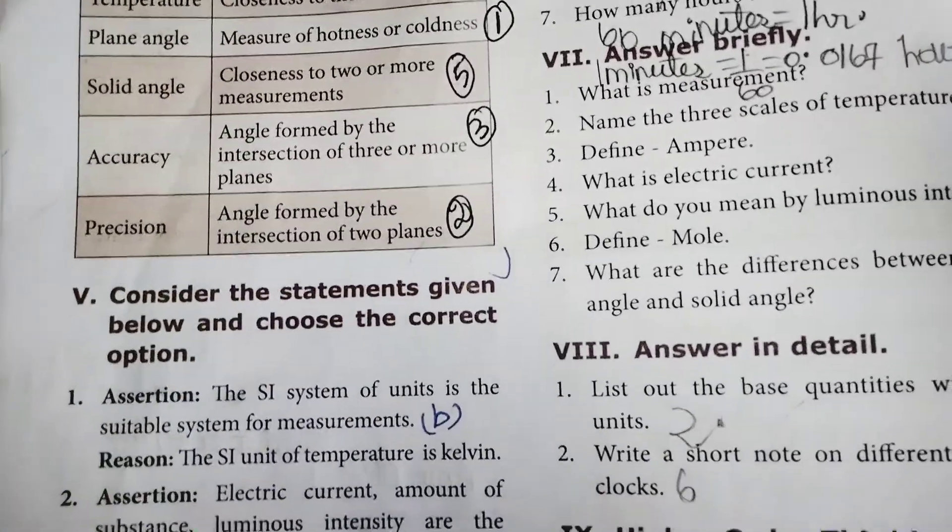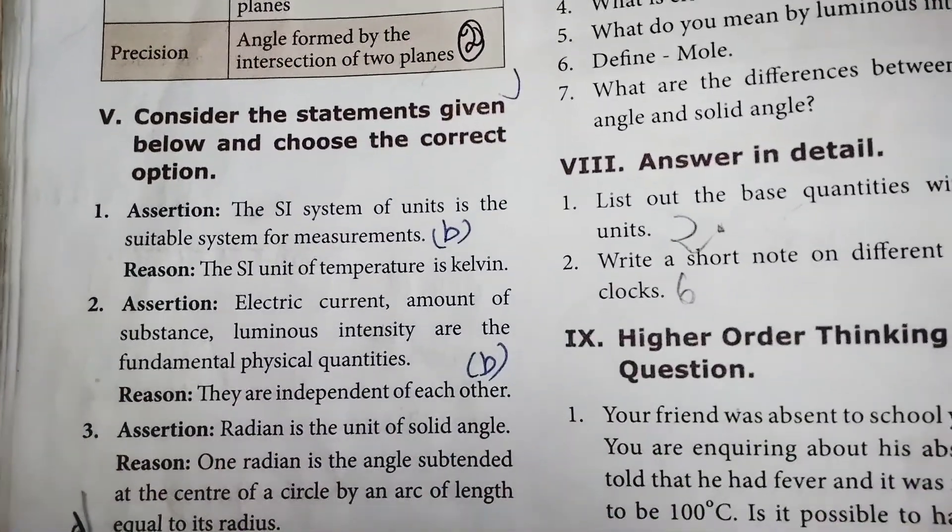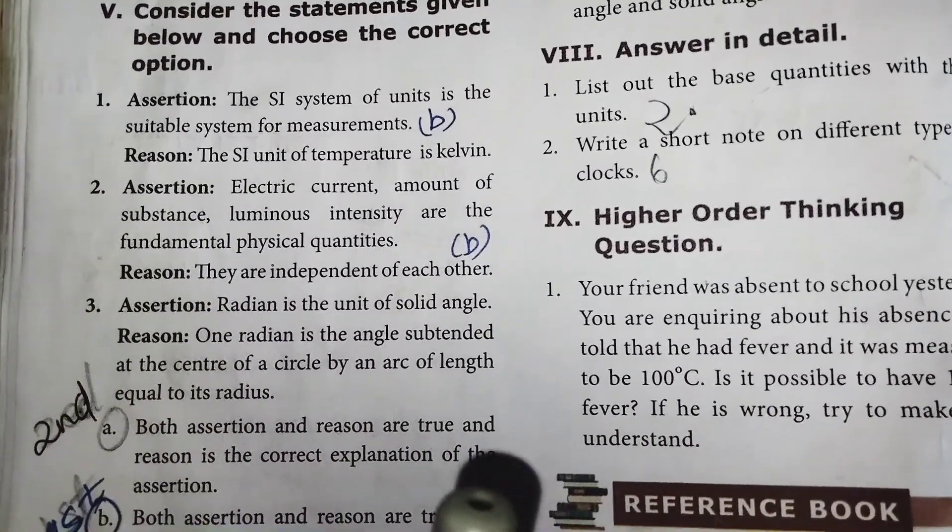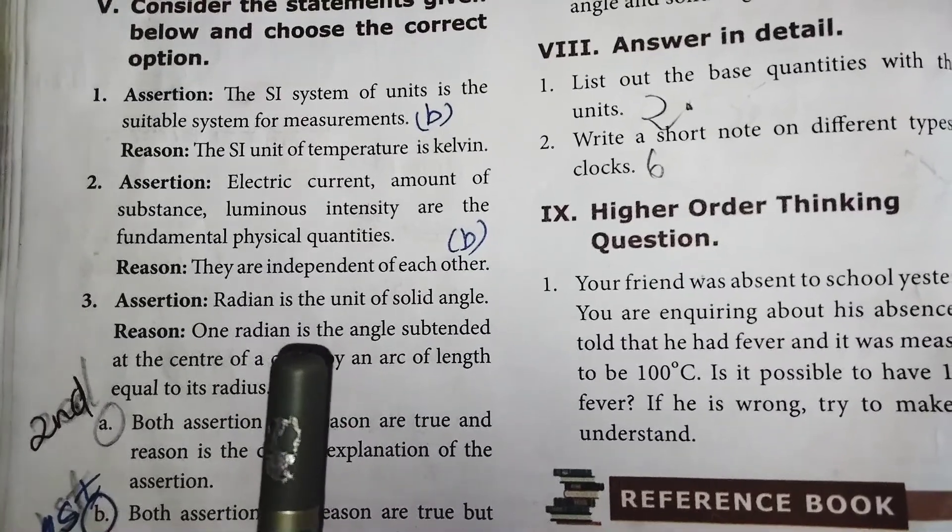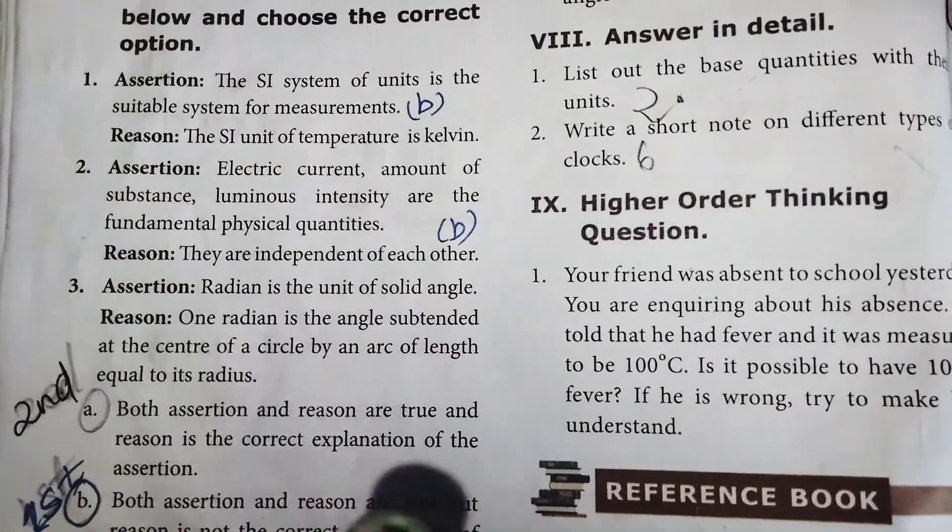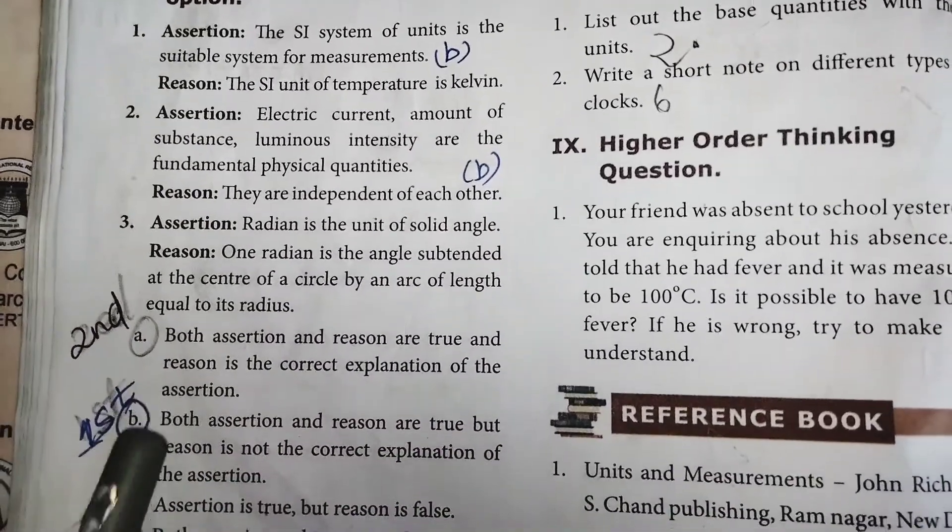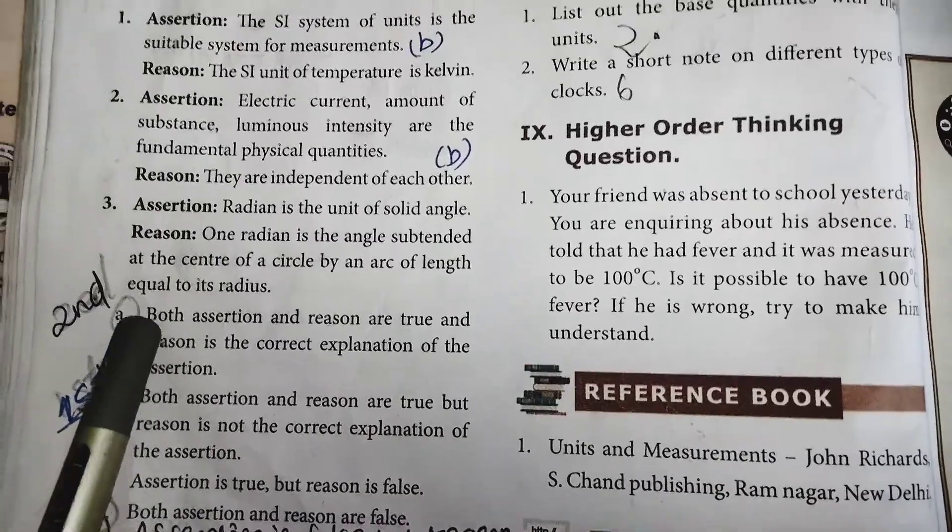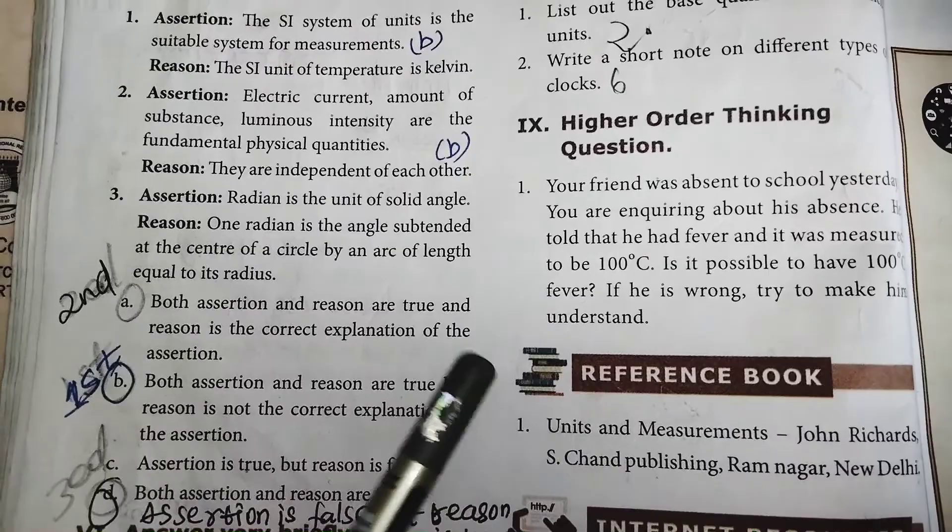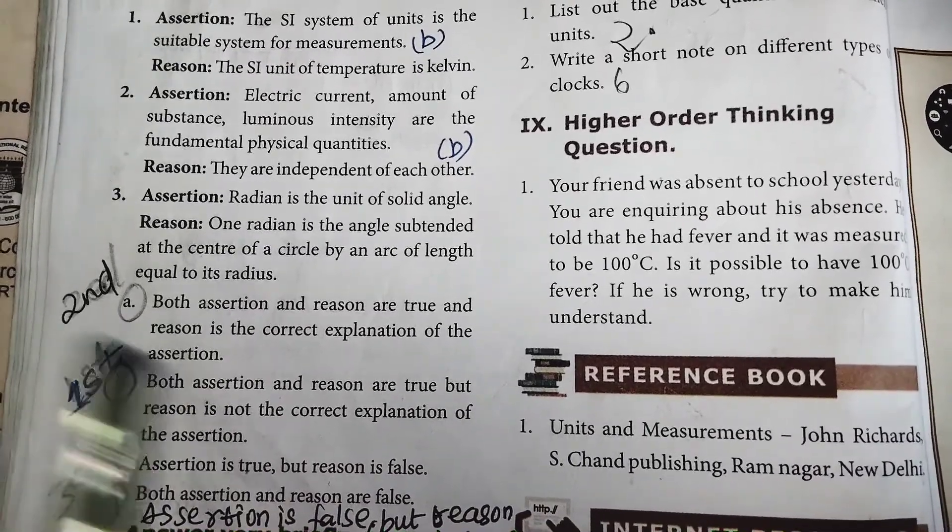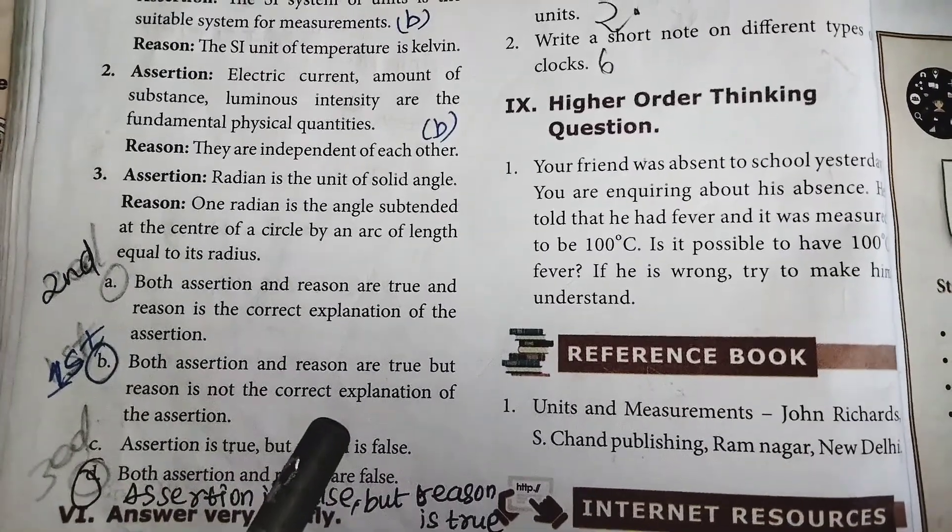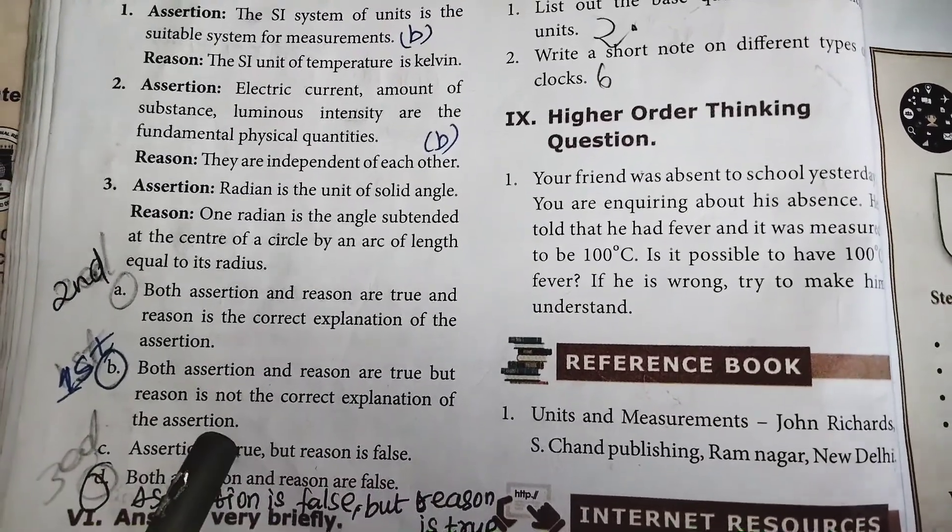Now consider the statements given below and choose the correct option. First one, assertion: The SI system of units is the suitable system for measurements. Reason: the SI unit of temperature is Kelvin. Both assertion and reason are true and reason is the correct explanation of the assertion. So, first one is B.